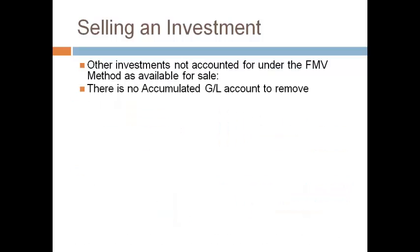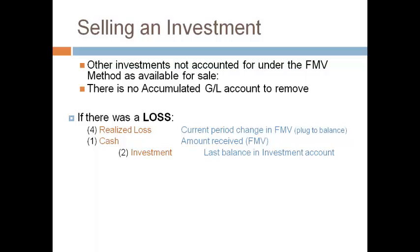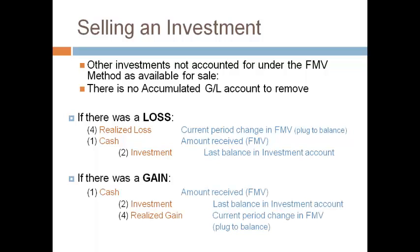Recording a sale of an investment under the cost method, the equity method, and the fair market value method as a trading security is very similar, with the exception that there is no accumulated gain/loss to remove. Step 3 — removing the accumulated gain/loss account — is not done because we do not have one of those accounts if the investment is not long-term available for sale. If there was a gain, the same steps are followed.